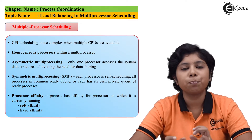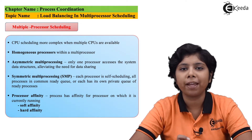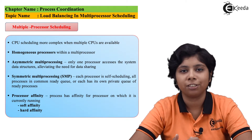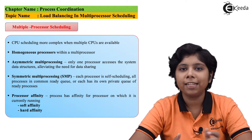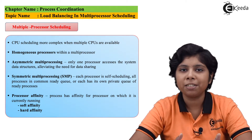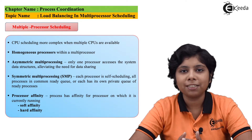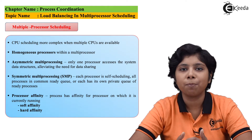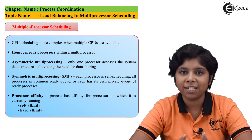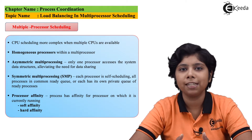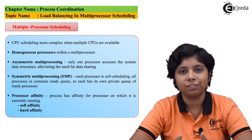Push and pull migration are not mutually exclusive to each other — they can be implemented and run in parallel. Systems like Linux and the ULE scheduler that supports the FreeBSD operating system implement both types of load balancing.